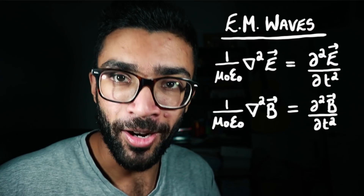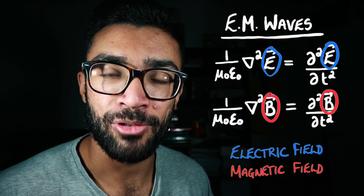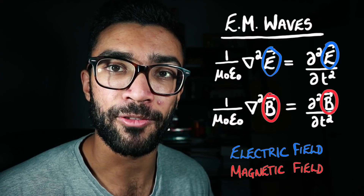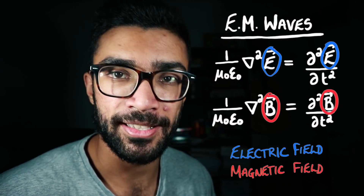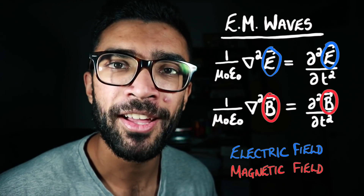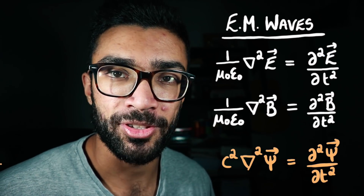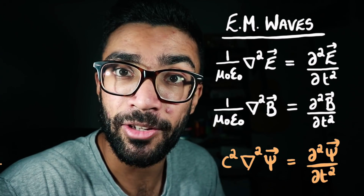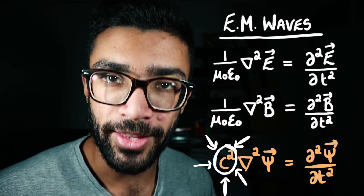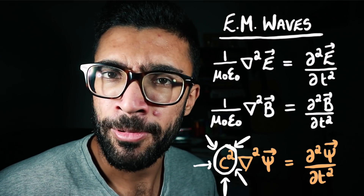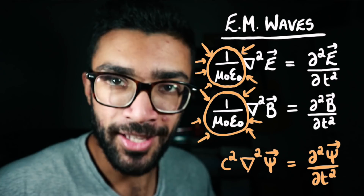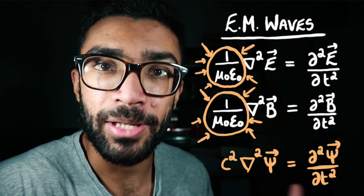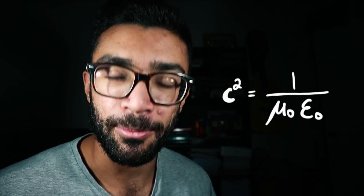Within the theory of electromagnetism there's a portion that deals with electromagnetic waves. These two equations describe the behavior of electromagnetic waves — the top one describes the behavior of the electric field and the bottom one describes the behavior of the magnetic field. These are specific cases of a more general equation known as the wave equation. In the general wave equation, one part represents the speed of the wave squared. Setting the two equal, we get that c² equals 1 divided by mu naught times epsilon naught.